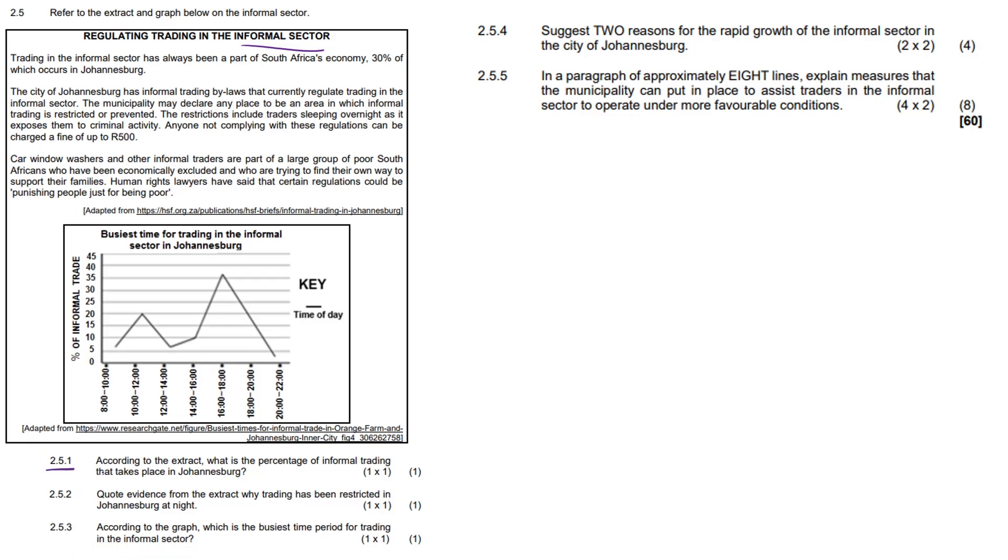So 2.5.1. According to the extract, what is the percentage of informal trading that takes place in Johannesburg? It's actually 30 percent that is coming from the extract. Quote, evidence from the extract why trading has been restricted in Johannesburg at night. So 2.5.2.